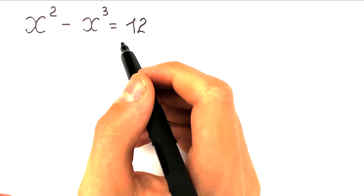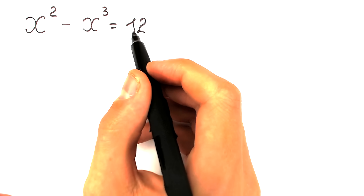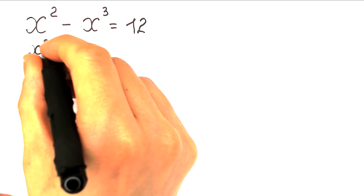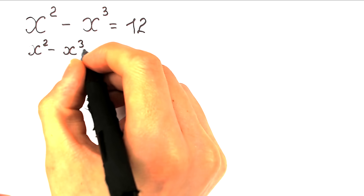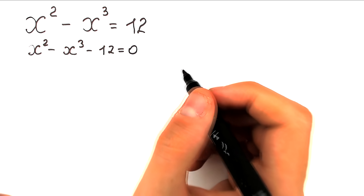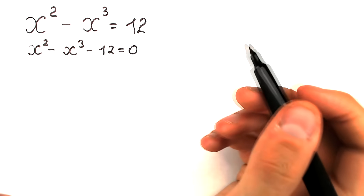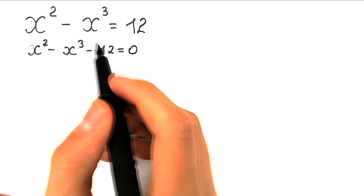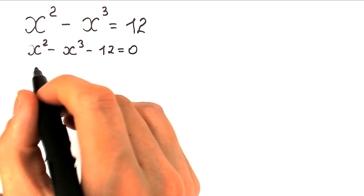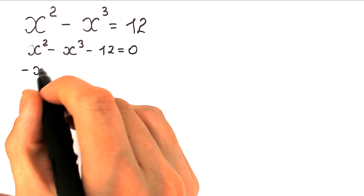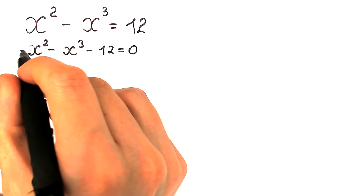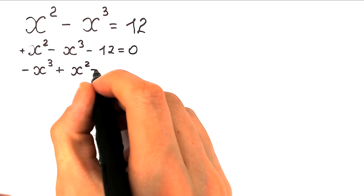First of all, we should bring all these variables from right to left. Let's bring this 12 from right to left. So we have x³ - x² - 12 = 0. We prefer the highest power on the left and the lowest power on the right. So let's bring the x³ from the middle position to the left. We have -x³, then plus x² and minus 12.